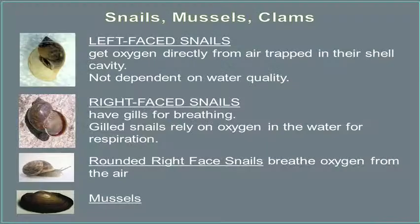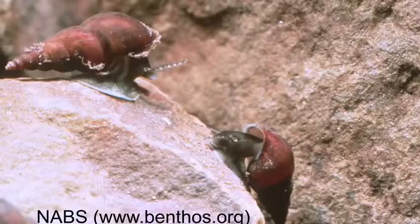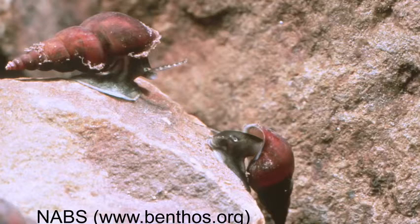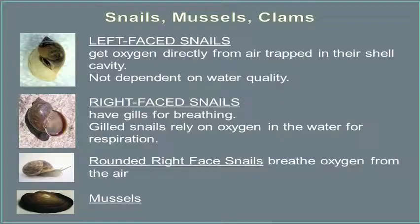There are three types of snails we're looking for: coiled left-face snails, coiled right-face snails, and rounded right-face snails. The way to tell the difference between a coiled left-face and a coiled right-face is to hold the snail in the palm of your hand. There's a pointy end of the snail and a pointy end of your hand — line up the pointy ends together, then look for the opening of the snail. If it opens on the left side, you've got a left-faced snail; if it opens on the right, you have a right-faced snail.